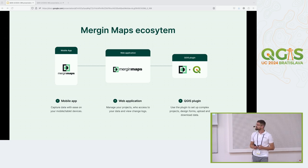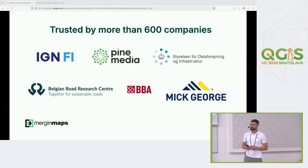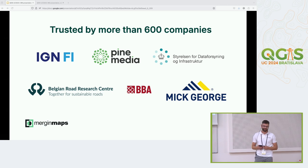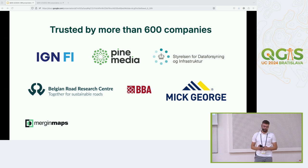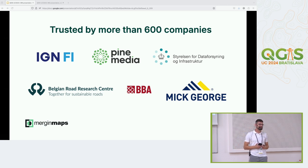More than 600 companies are currently using Merchant Maps for effective field data collection. Our customers come from a wide variety of segments, from public service to ecology, construction, optic fibers, utilities and so on. Multiple universities, including this one, are teaching Merchant Maps to their students. We also offer special plans for students and NGOs to help them with their minimal or non-existent budget.